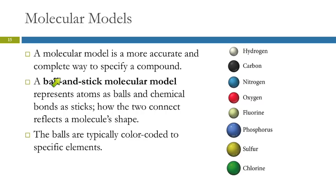A ball and stick model uses balls to represent the atoms and sticks to represent the bonds. How they connect gives us an idea about the shape. When we use balls to indicate the atoms, we use different colors to indicate the different elements.